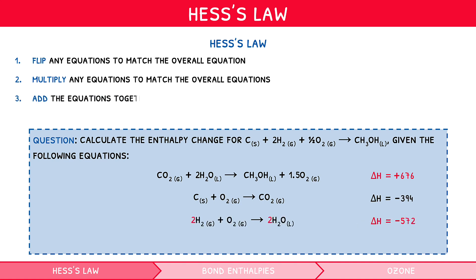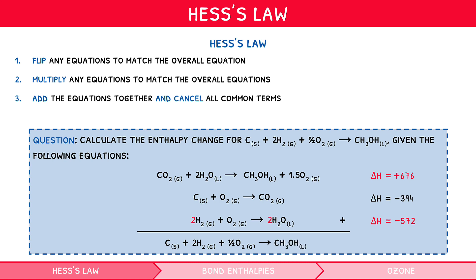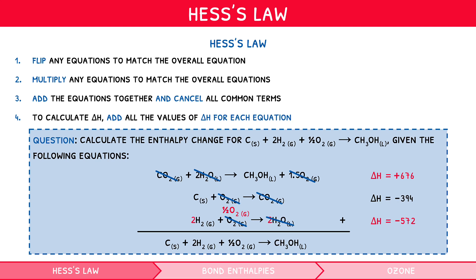Third, add all the equations together and cancel all common terms. If you have done things right, you should get the same equation as the overall one. Cancel the carbon dioxide on the right in equation 2 and on the left in equation 1. Cancel the water on the left in equation 1 and on the right in equation 2. Summate the 1 oxygen from reactions 2 and 3 to give 2 oxygens, which cancel with the 1.5 oxygens in equation 1 to leave 0.5 oxygens as required. Finally, to calculate delta H, simply add the values of delta H for each equation after flipping or multiplying: 676 + (−394) + (−572) = −290 kJ.